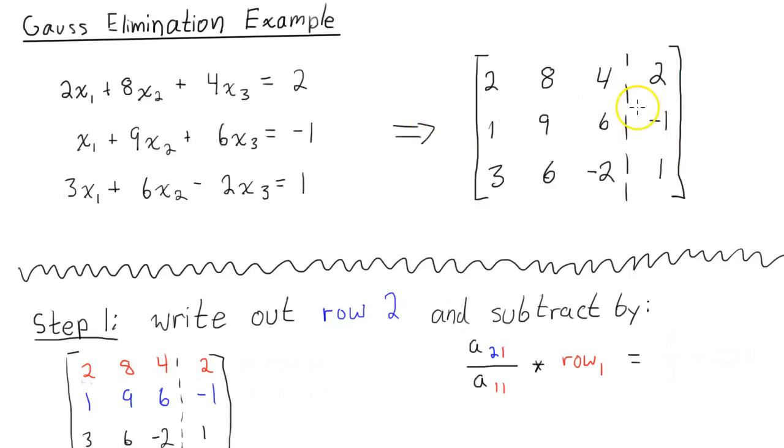Okay, so I'm going to want to start by modifying this first row to make this a 0, right? Because in the end, we want this to be a 0, this to be a 0, and this to be 0. So step one is make this guy a 0.